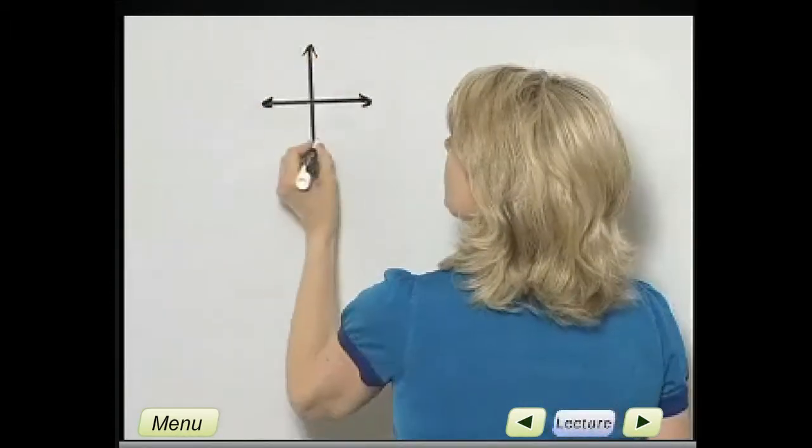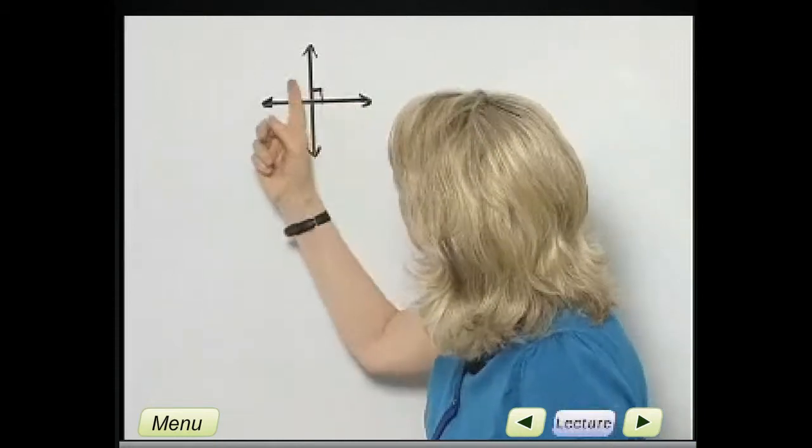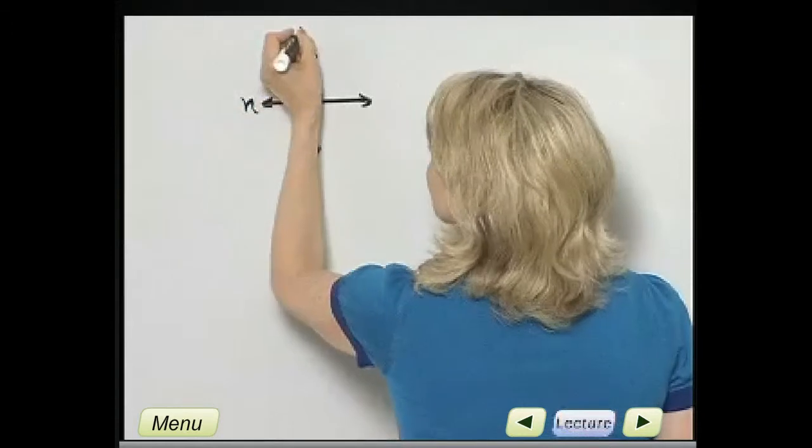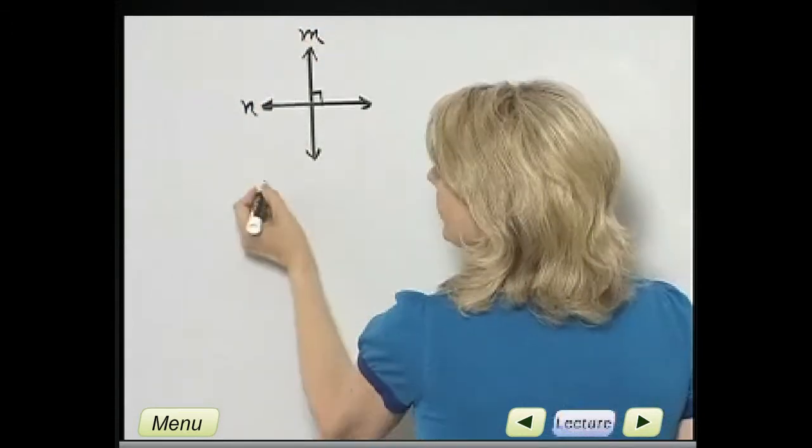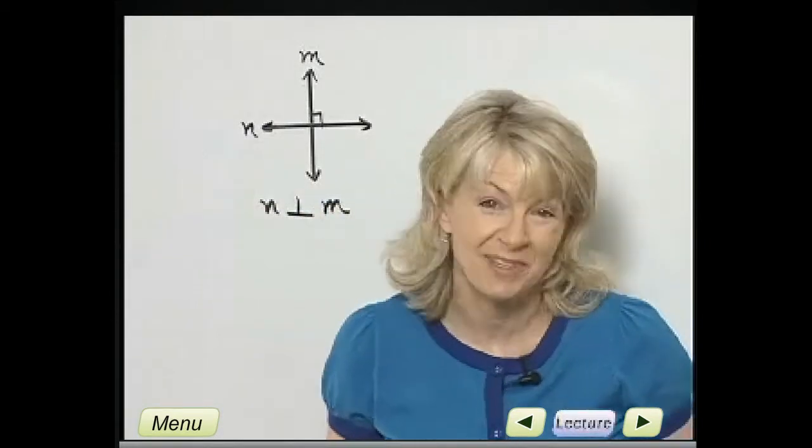Here we have perpendicular lines. And if I simply place that notation, I know we have perpendicular lines. They meet and right angles are formed. If I call this line N and line M, I can write N is perpendicular to M. Those two lines are perpendicular.